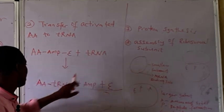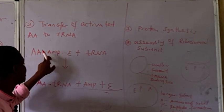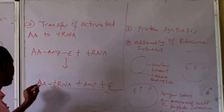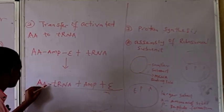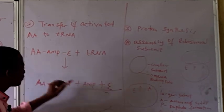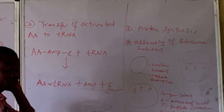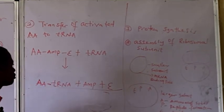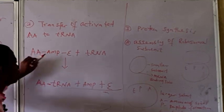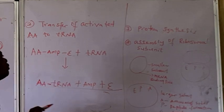The activated complex attaches to tRNA. When attached, the product is amino acid joined to tRNA, and AMP is released along with the enzyme. That is the second step of translation — the transfer of activated amino acid to tRNA.